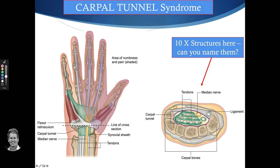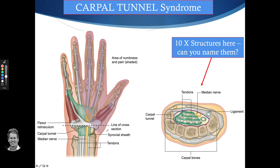Looking at this picture, you can see the thumb, index, middle, and half the ring finger are shaded. The median nerve controls sensation to this part of the hand. The remaining area — the other half of the ring finger and beyond — is supplied by the ulnar nerve, but that's not part of this talk.